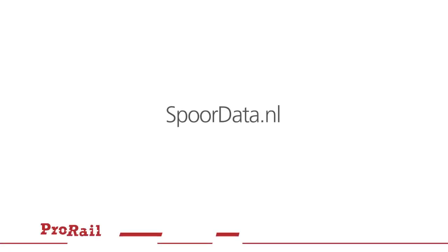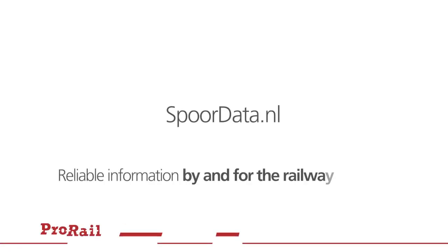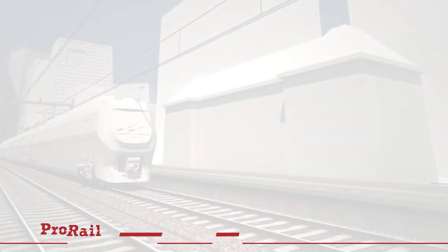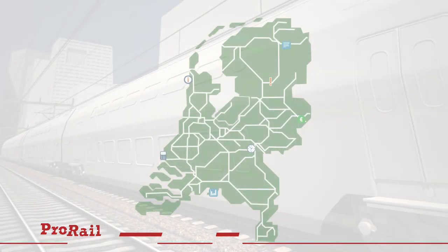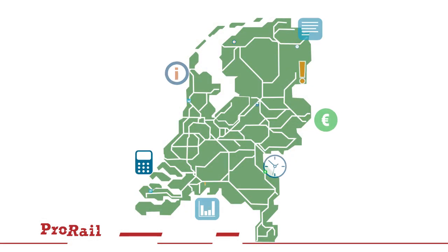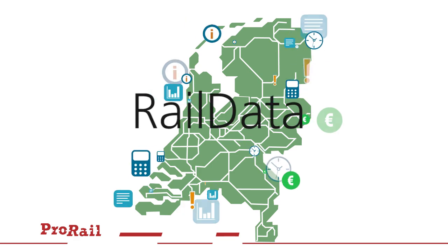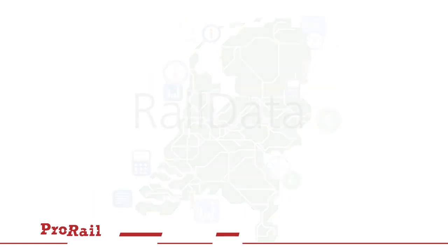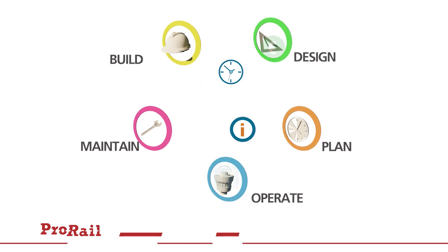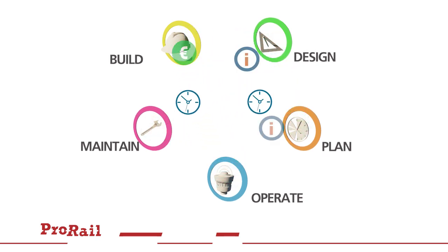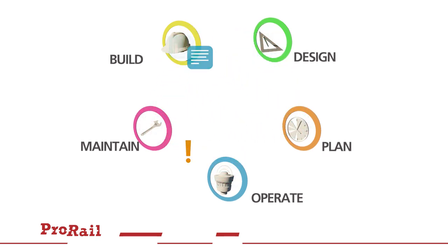SporeData.nl — reliable information by and for the railway sector. ProRail's network involves a great deal of information, which we also call rail data. In order to provide an optimal rail service, ProRail and its partners exchange a lot of information about the rail infrastructure.